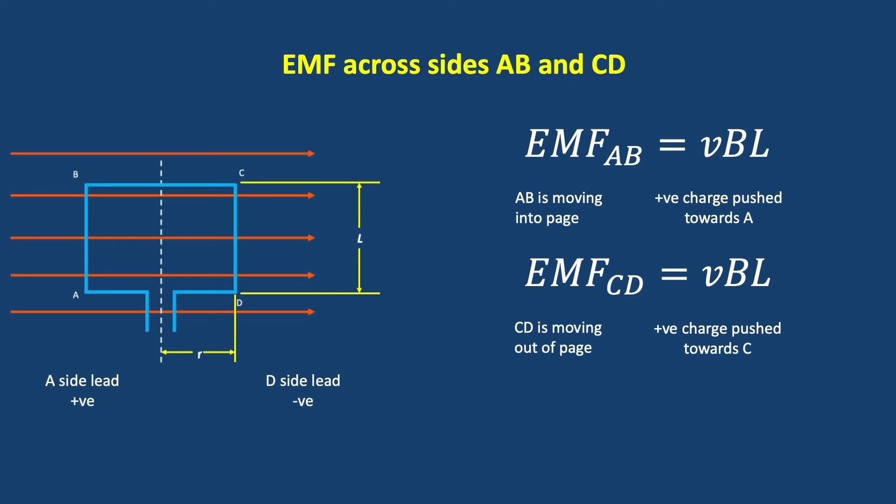As a result, we end up having positive charge pushed towards the A side of the coil. This results in negative charge being pushed towards the D side of the coil, and so a voltage is set up across the coil. In this particular configuration, with the spin going the way that it is, the A side is positive, and the D side is negative. The EMF generated across AB and the EMF generated across CD cooperate with each other, work together to generate the EMF of the coil, which is equal to 2VBL.